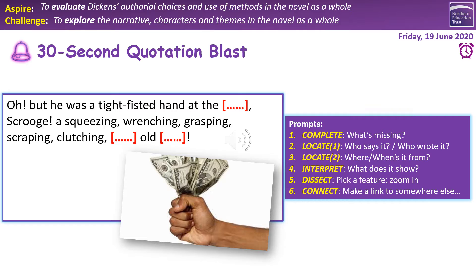We're starting with a 30-second quotation blast — a series of quotations, and as ever you need to try and do those things from the purple box prompts on the right-hand side. Give yourself 30 seconds, try and work out what's missing, who says it, where's it from, what does it show, a feature or a word to zoom in on, a connection to somewhere else. Now because we have done these before I'm going to give you the answers to the missing words, but the other things I'm going to try and rely on for you guys to do yourselves. If you want to do this as annotation of the text you can do, if you want to make notes you can do, if you want to do mind maps that's absolutely fine as well, whatever works for you.